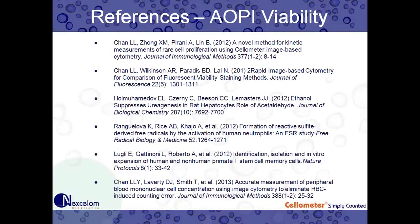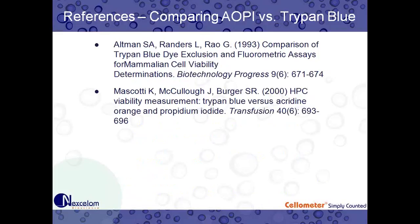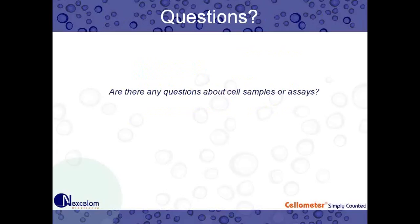We have some references here — as mentioned, this webinar will go out to everyone so you can see these references more closely. These reference AOPI viability with a variety of different dual fluorescent cellometer instruments. We also have two references that compare AOPI to Trypan Blue. Are there any questions related to the cell samples or assays we reviewed today?